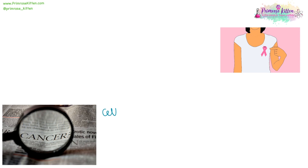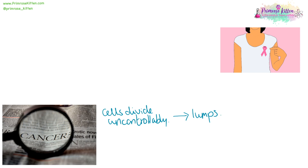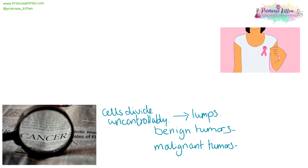Cancer is when cells begin to divide uncontrollably. This is going to lead to lumps, which for some people is the first sign that something is wrong. And these lumps can be divided into two groups: benign tumours and malignant tumours.